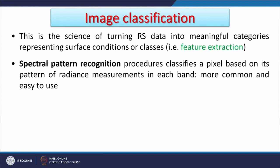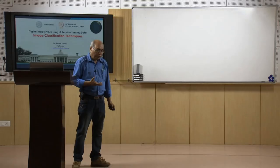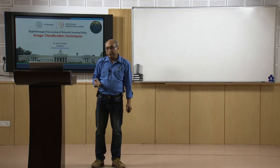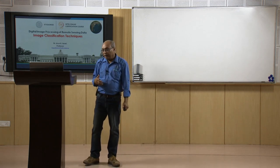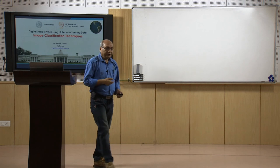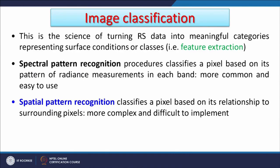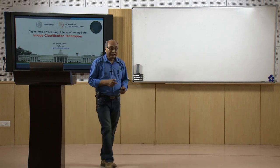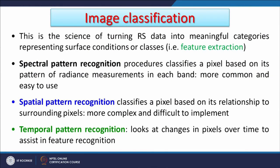Image classification is also referred to as spectral pattern recognition, which classifies a pixel based on its pattern of radiance measurements in each band — it is pixel-based and common and easy to use. For a false color composite with three bands, classification is performed across all three bands. There is also spatial pattern recognition, which classifies a pixel based on its relationship to surrounding pixels (the neighborhood) — more complex and difficult to implement.